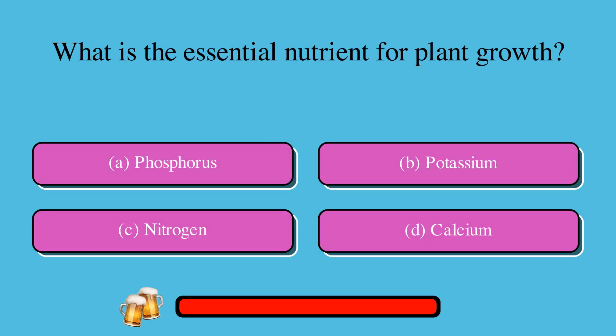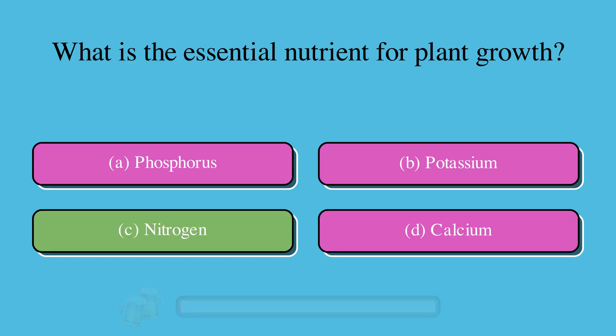What is the essential nutrient for plant growth? A. Phosphorus, B. Potassium, C. Nitrogen, or D. Calcium? The correct answer is C. Nitrogen.